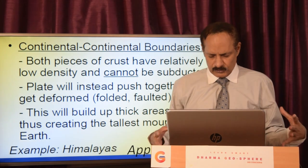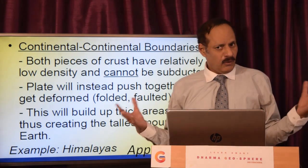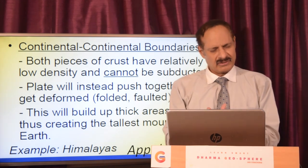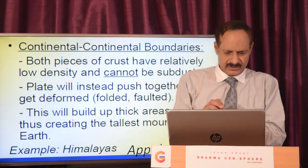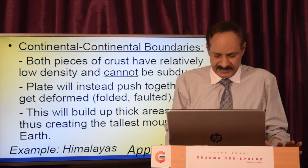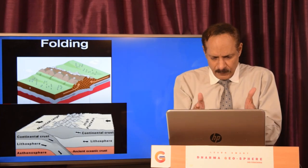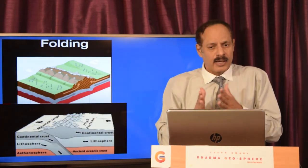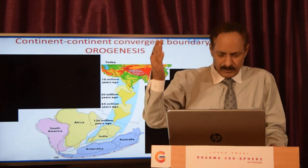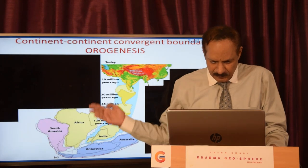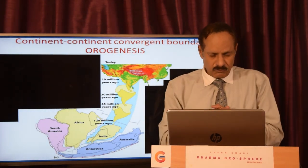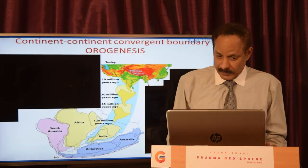At continent-continent convergent boundaries, both pieces of crust have relatively low density and cannot be subducted, so the plates instead push together and get deformed — mostly folded, or sometimes they break and get into the form of folds. This builds up thick areas of crust, creating the tallest mountains on Earth: the Himalayas, Appalachians, Andes, Alps, etc. The Himalayas were created by the pushing of the Eurasian plate into the Asian plate, and they are still growing today — they are the youngest fold mountains.